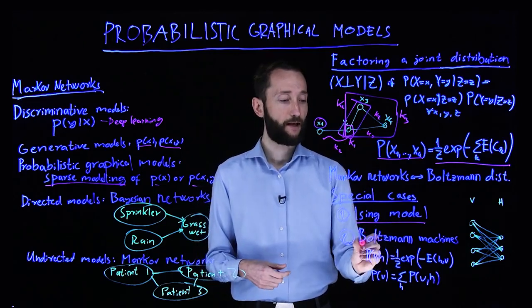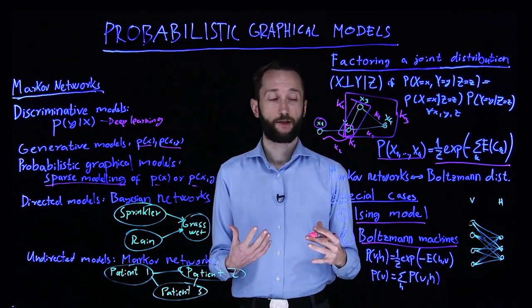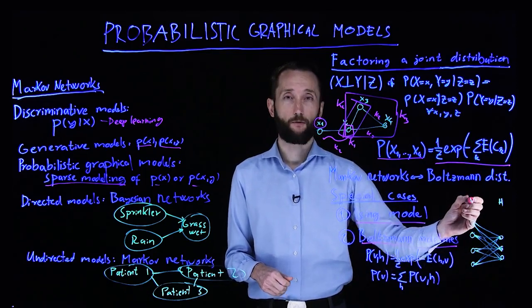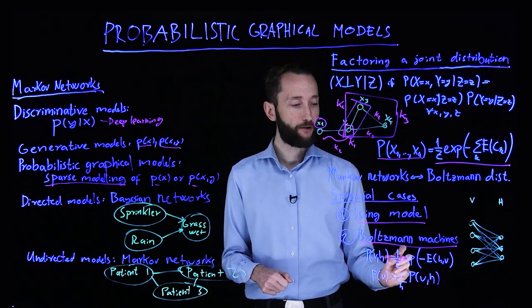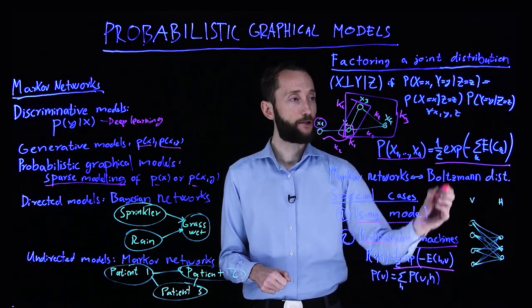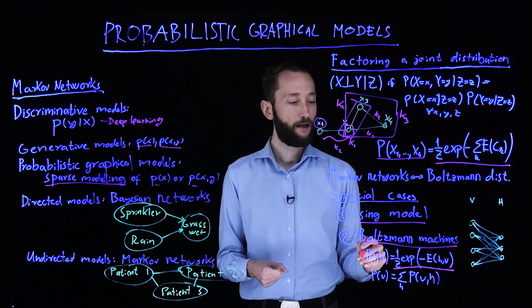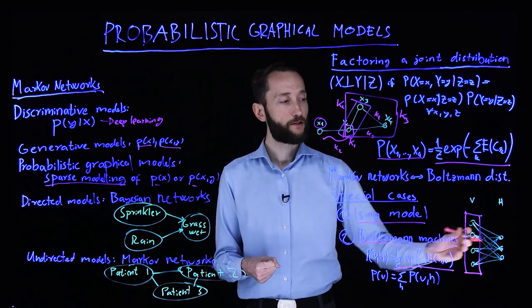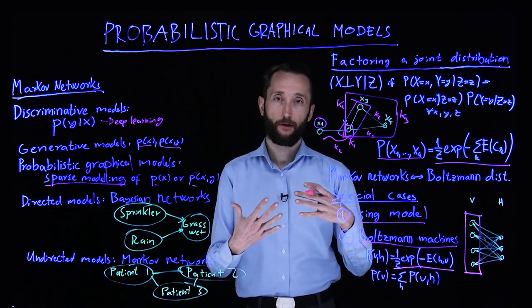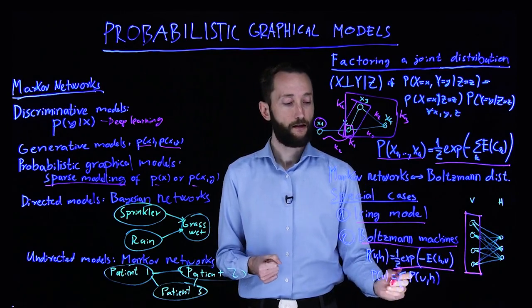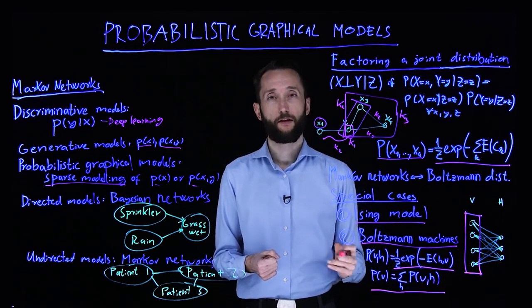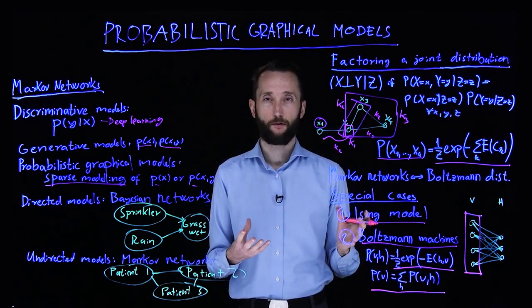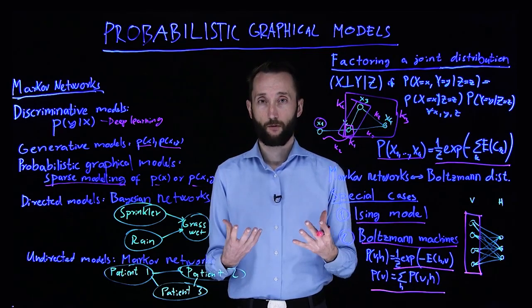A special case of Ising models, and hence Markov networks, are Boltzmann machines. Here you partition your Ising spins into two categories: visible ones and hidden ones. You define the same energy function as for an ordinary Markov network, but you're only interested in reproducing some probability distribution on the visible nodes. The hidden nodes are only there to help you mitigate correlations between these random variables, so you marginalize out over the hidden nodes to get the probability distribution that you're interested in. These are very powerful methods, but they are expensive to train on classical computers — so this is one area where quantum computers can help.